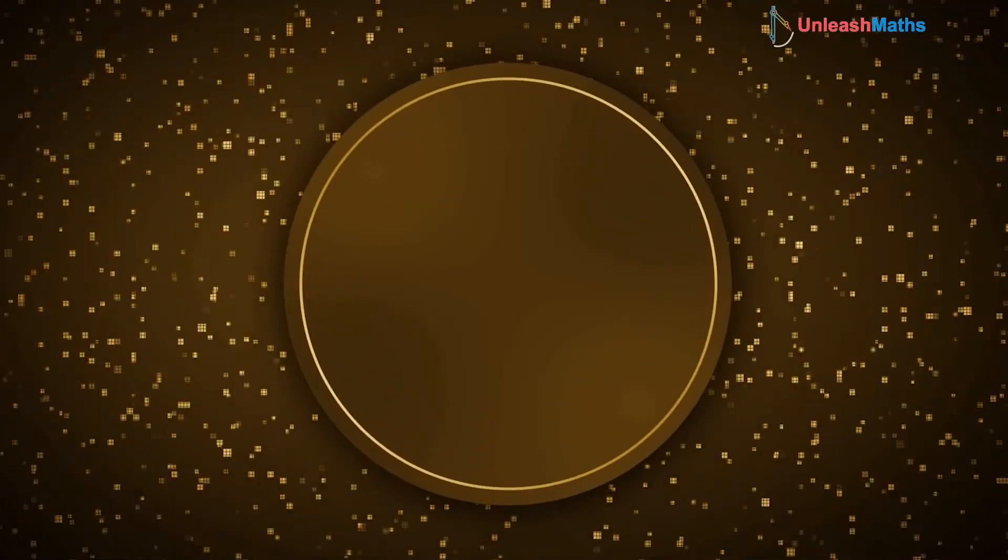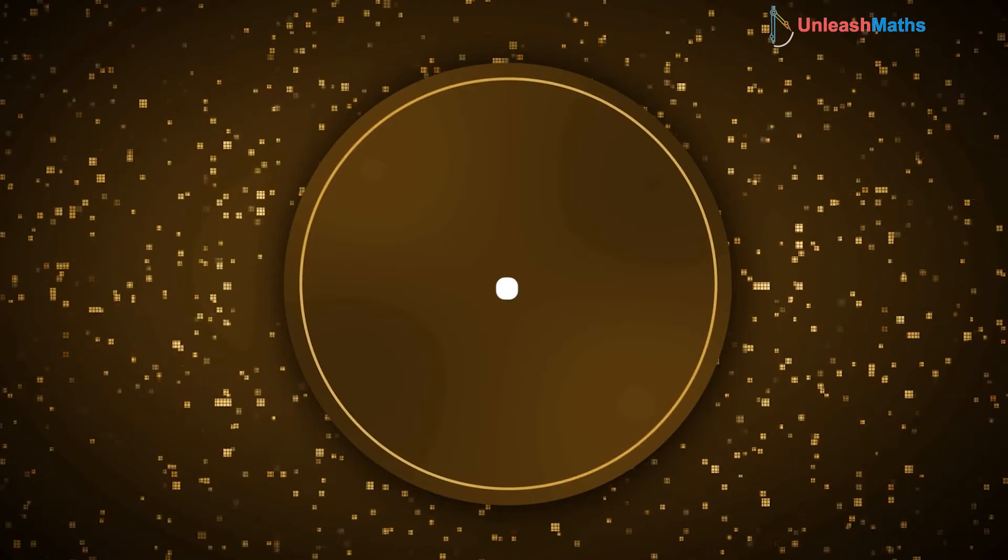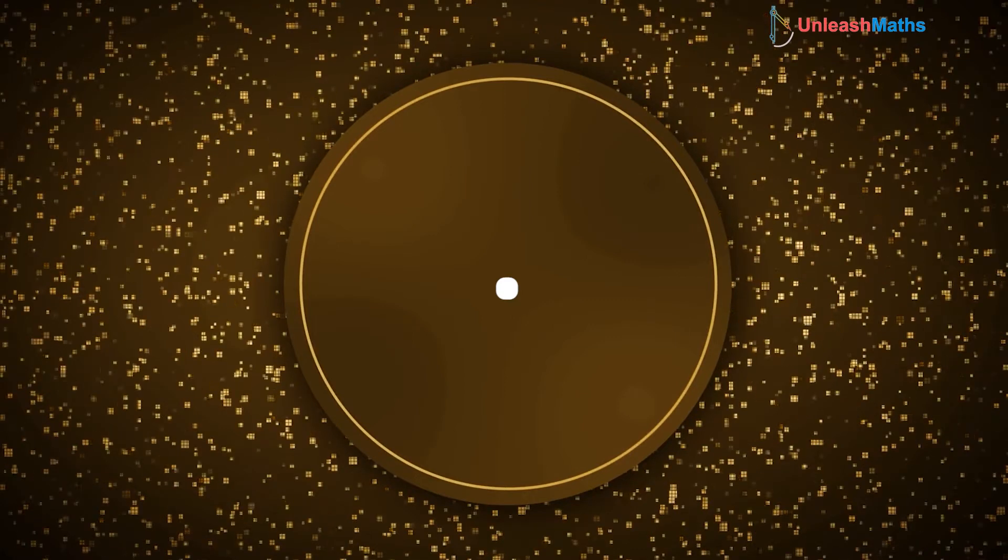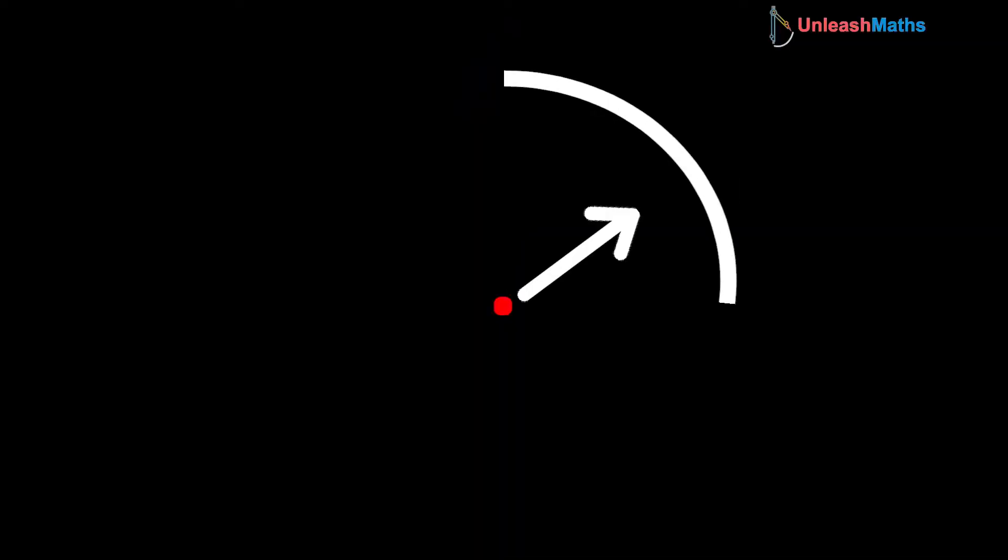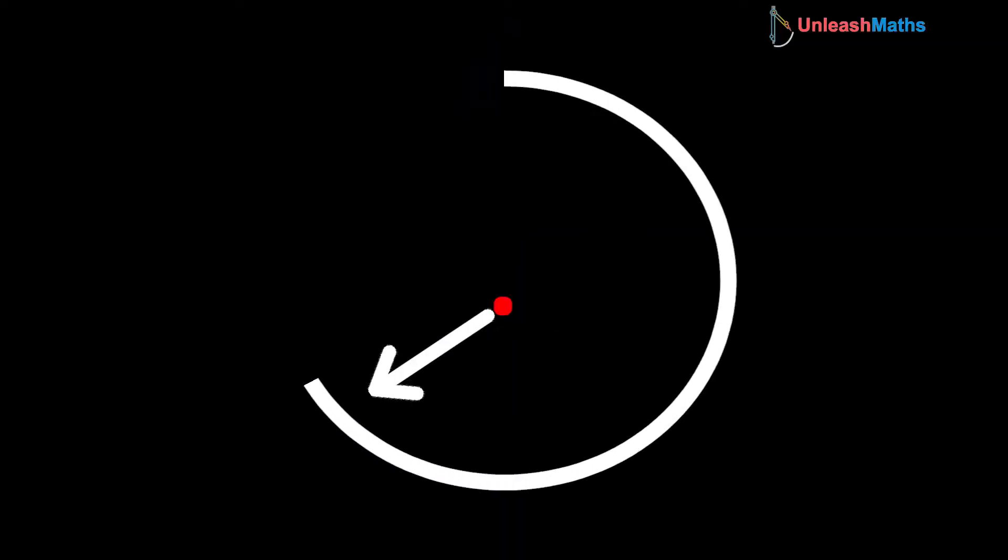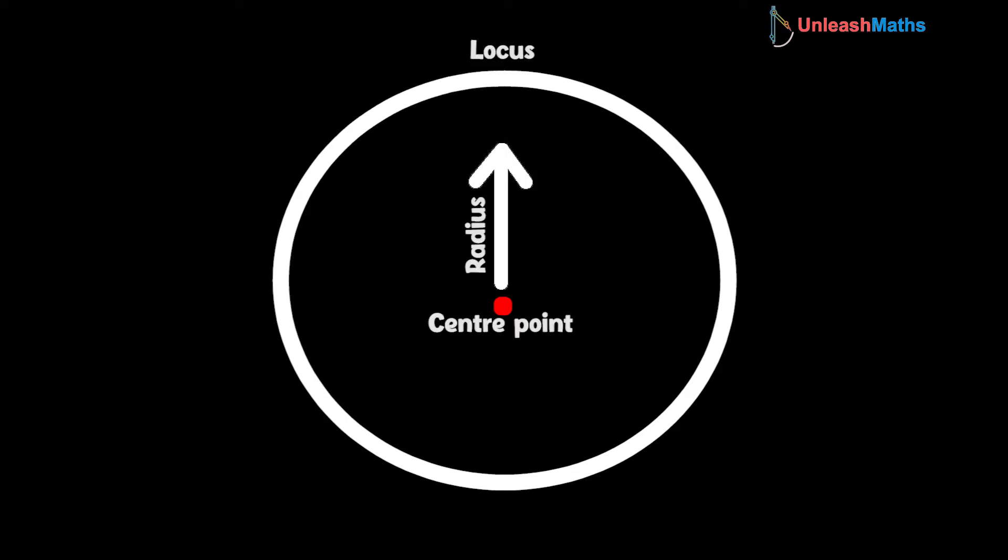A circle is a set of all those points that are equidistant from another single point. What does that mean? If you take a point and then draw equidistant points all around it and then you join it, you will get a circle.